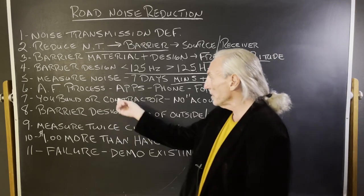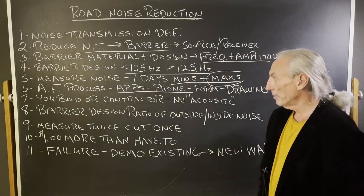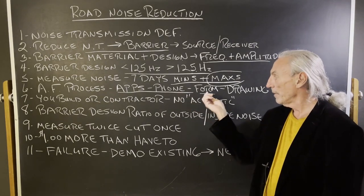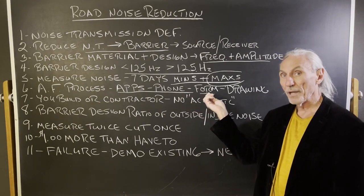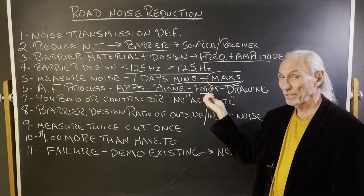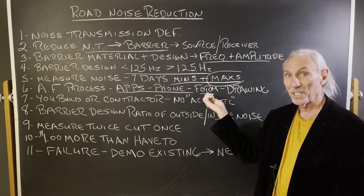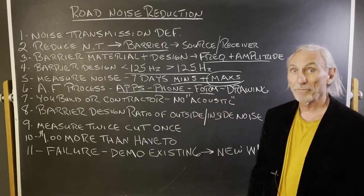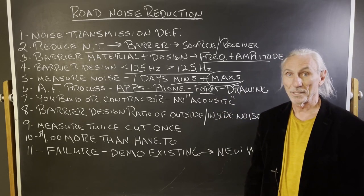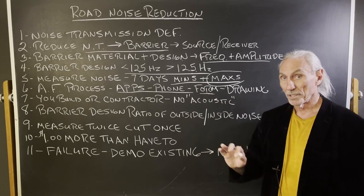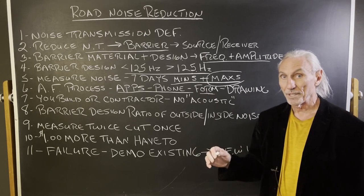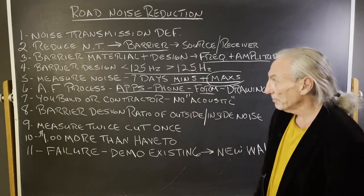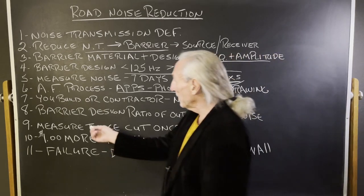We have a process — we send you apps you download on your phone. You fill out our online form with the data. It's very easy; we've done 1,400 of these. Then we issue you a barrier drawing after I run the numbers and get the analysis. I look at the minimums and maximums over the seven days, the frequency and amplitude, and then we generate a drawing — a barrier design you can build or give to a contractor.